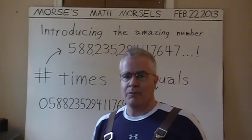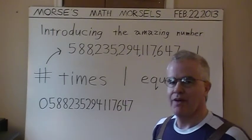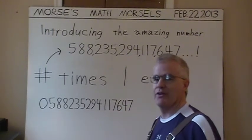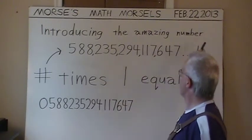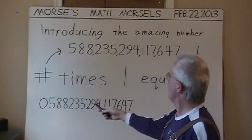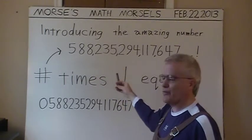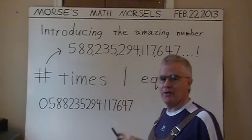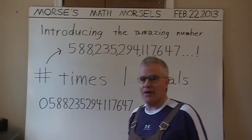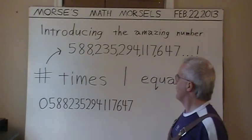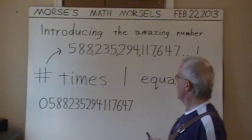Hello and welcome to Morse's Math Morsels. In this morsel, I am introducing the amazing number 588 trillion, 235 billion, 294 million, 117,647 — an extraordinary 15-digit number.